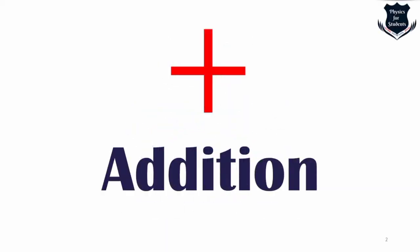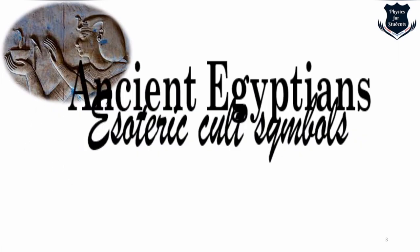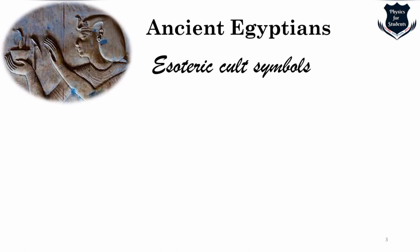First, we look at the basic symbol of arithmetic operation which is addition. The symbols, as we know, go back to the ancient Greeks, but the Greeks used these symbols not for addition, subtraction, division and multiplication — they were used for esoteric cult symbols about combining the feminine with the masculine.